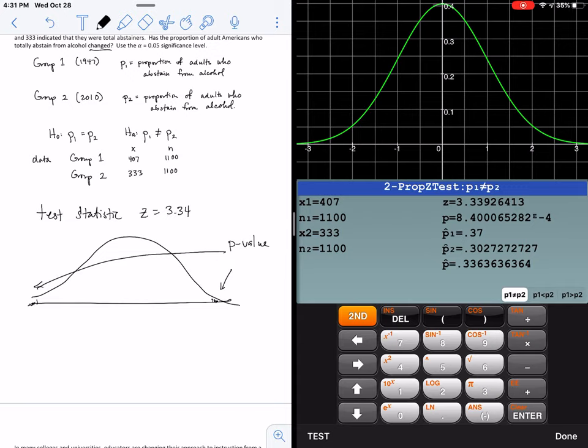And do you see it says 8.4 E negative 4. So that's 8.4 times 10 to the negative 4, which is the same thing as 0.0008, which is a very, very small p-value. So therefore, this p-value is much lower than our significance level.